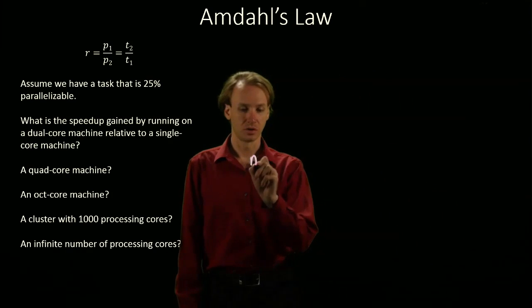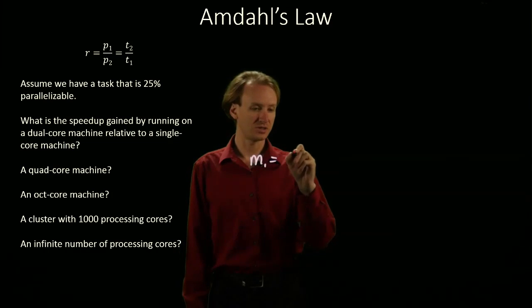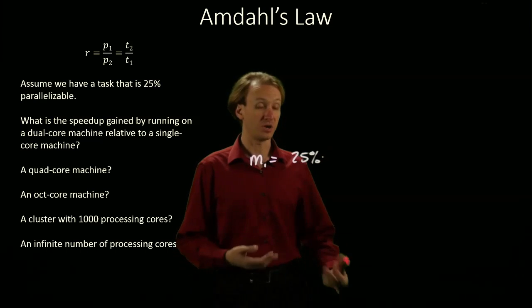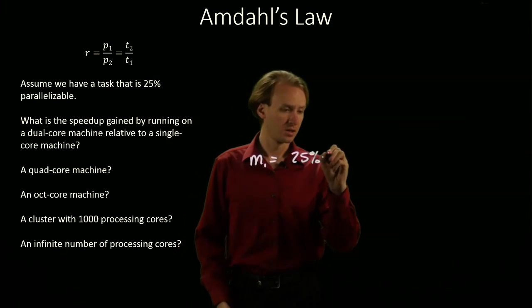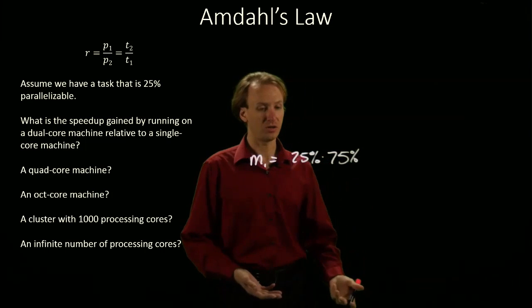Our machine with a single core spends 25% of its time on the parallelizable code and 75% of its time on non-parallelizable code.